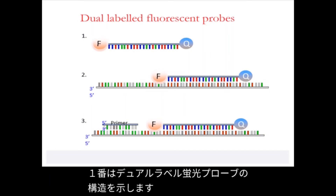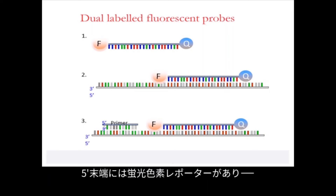In the first line of this slide is shown the structure of a dual labeled fluorescent probe. The five prime end of the probe has a fluorescent reporter group attached to it and the three prime end of the probe has a quenching molecule.